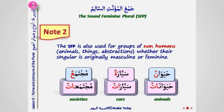The sound feminine plural is also used for groups of non-humans — animals, things, and abstractions — whether their singular is originally masculine or feminine. Examples: حيوانٌ → حيواناتٌ, سيارةٌ → سياراتٌ, مجتمعٌ → مجتمعاتٌ.